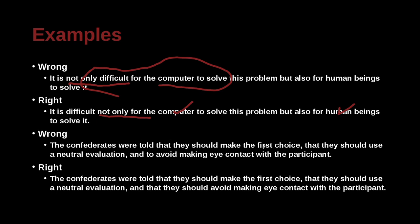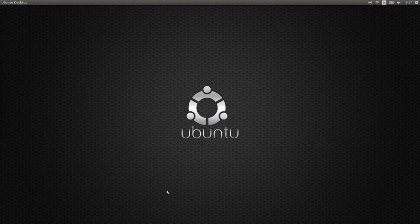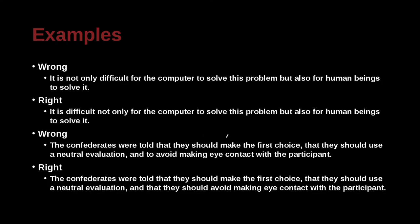'The Confederates were told that they should make the first choice, that they should use a neutral evaluation and avoid making eye contact with the participants.' Confederates are people used in studies to help with research, but the other participants don't know they are helping. The correct sentence reads: 'The Confederates were told that they should make the first choice, that they should use a neutral evaluation and that they should avoid making eye contact with the participant.'